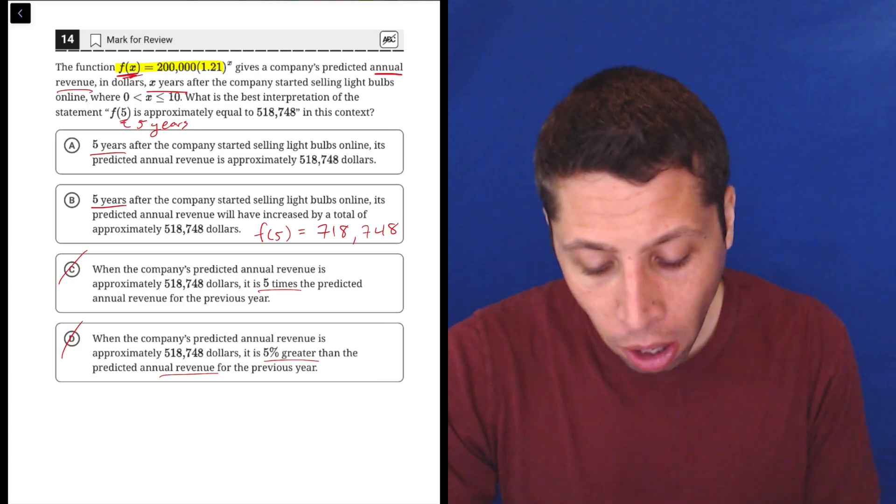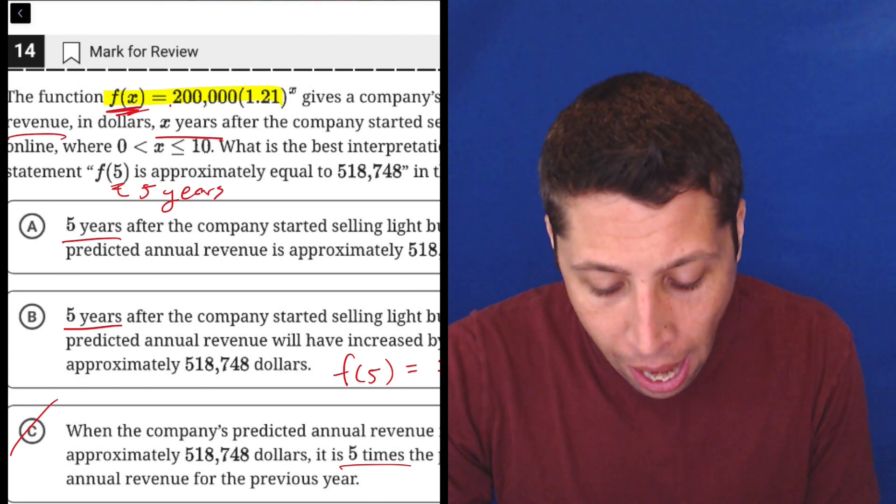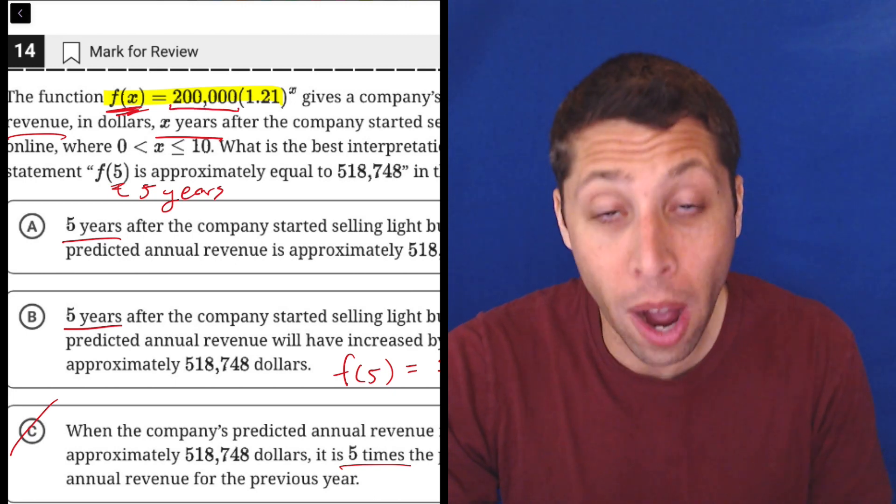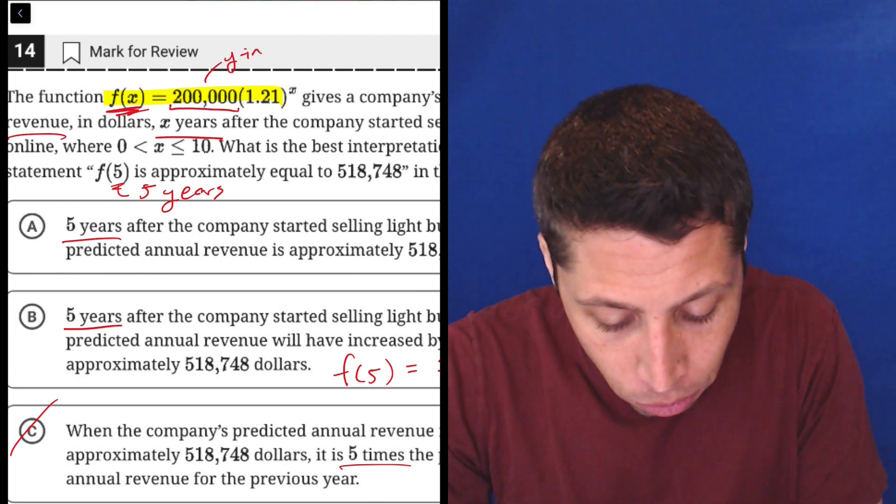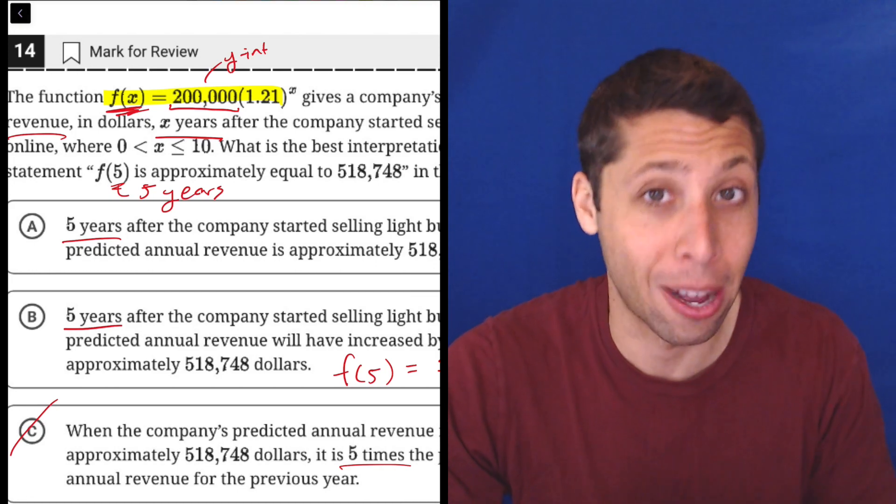Now, where'd I get that number from? Well, because I know how to read equations like this, this is called an exponential equation. I know that the starting value, the y-intercept is the part kind of right in front of all the business end of this equation. So that's 200,000.